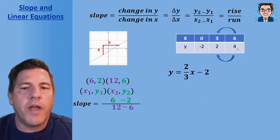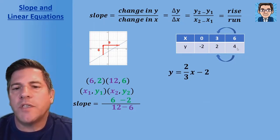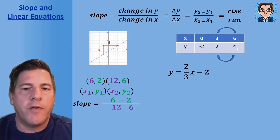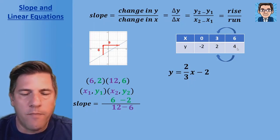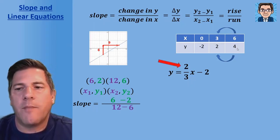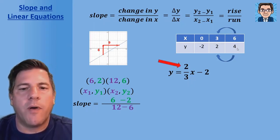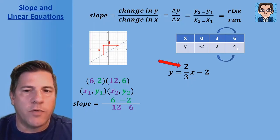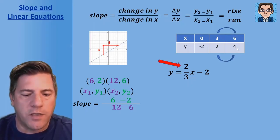For an equation solved for y — slope-intercept form — just pick the number being multiplied by x, and that's your slope. So two over three is our slope.